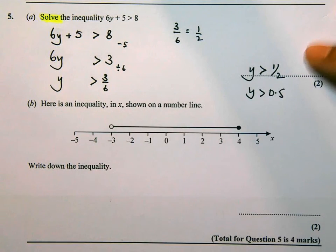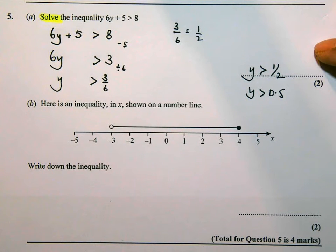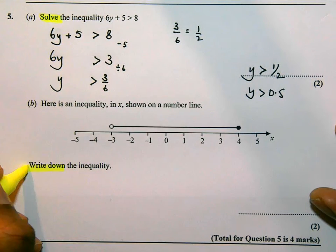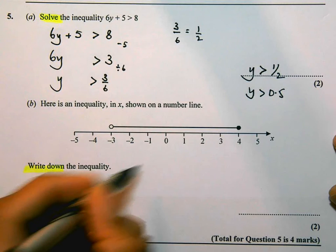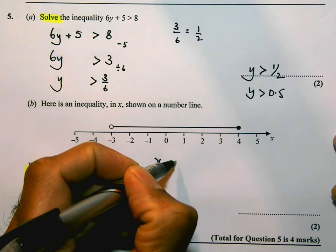Part B: here is an inequality in X, shown on the number line. They want us to write down the inequality. So this is straightforward, and you should be familiar with this sort of inequality. It's going to have X and I'm going to have a less than sign and a greater than sign there. I need to decide whether they're going to be equal to or not.